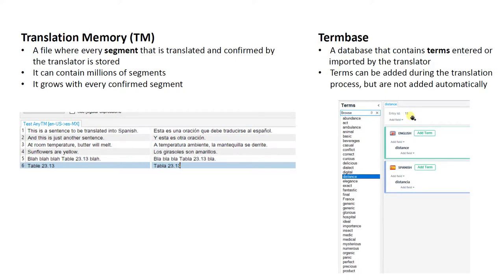The translation resources used by SDL Trados Studio are translation memories and term bases. A translation memory is a file where every segment that is translated and confirmed by the translator is stored. These six segments have been stored in the translation memory — each with the English and the Spanish — and each is a translation unit. As you work and confirm each segment, they are stored in the translation memory, which can contain millions of segments and grows with every confirmed segment.